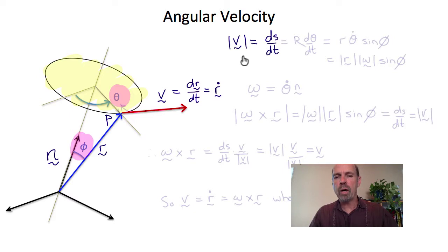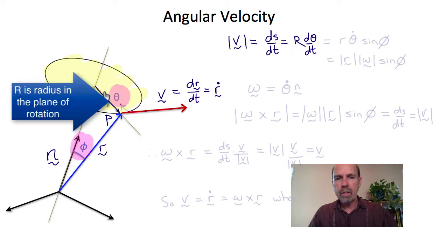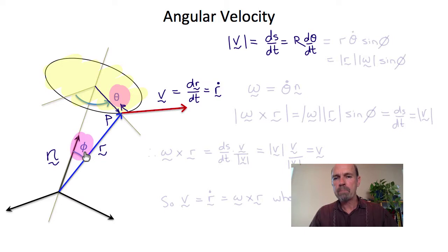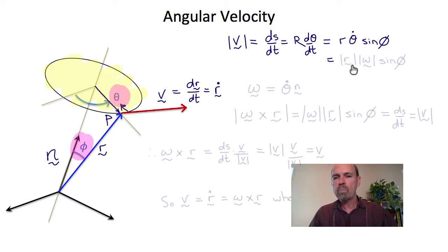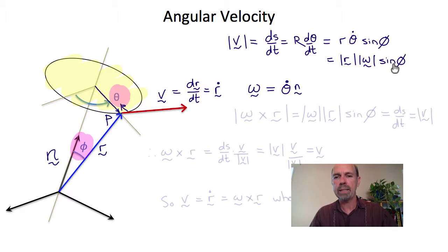The magnitude of v is ds/dt, where s is arc length around the arc, which would be r dθ/dt. Now r here is the radius in the plane of rotation of the point P, which is therefore r sin φ. So ds/dt equals r θ-dot sin φ, where r is the magnitude of the position vector r, and θ-dot is the magnitude of the angular velocity vector omega. So the magnitude of the velocity equals the magnitude of the radius times the magnitude of the angular velocity times sin φ.